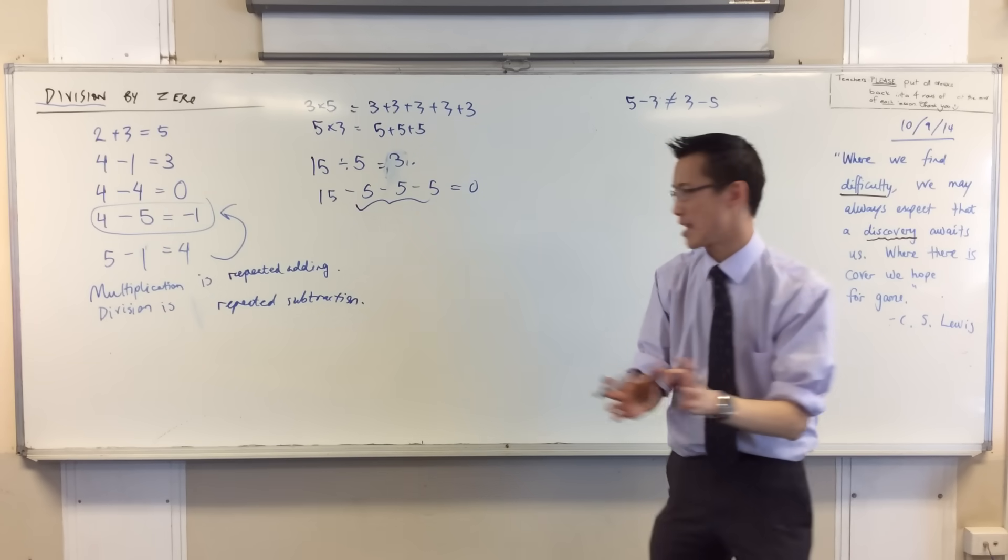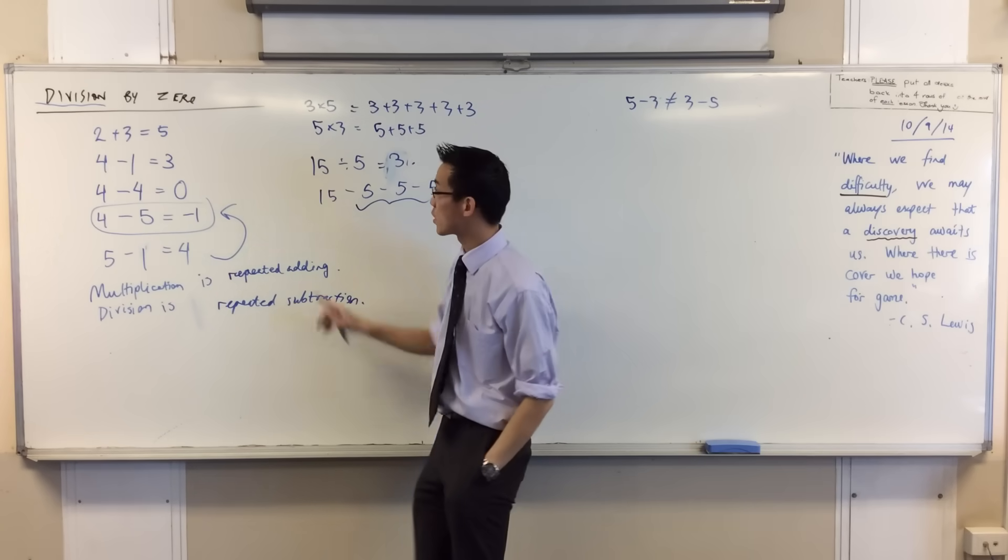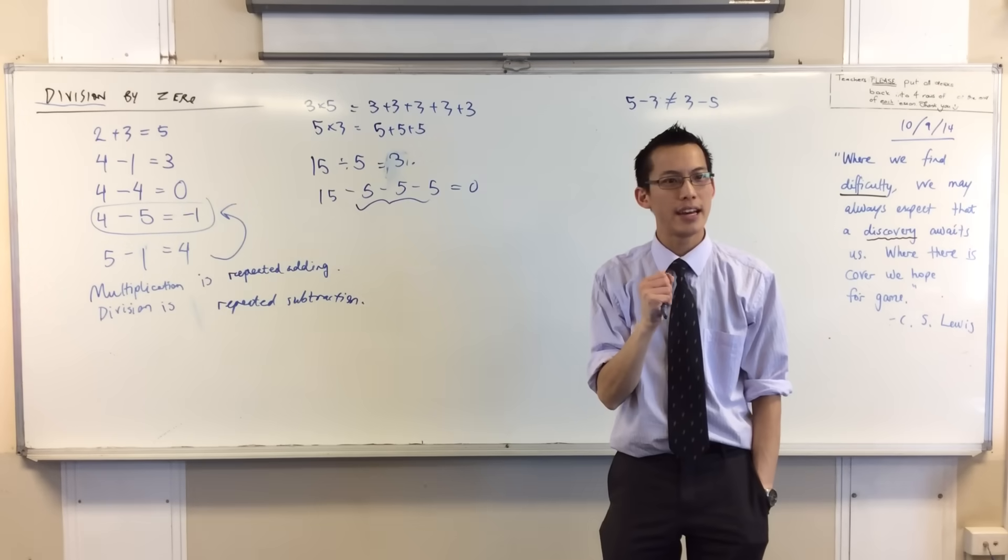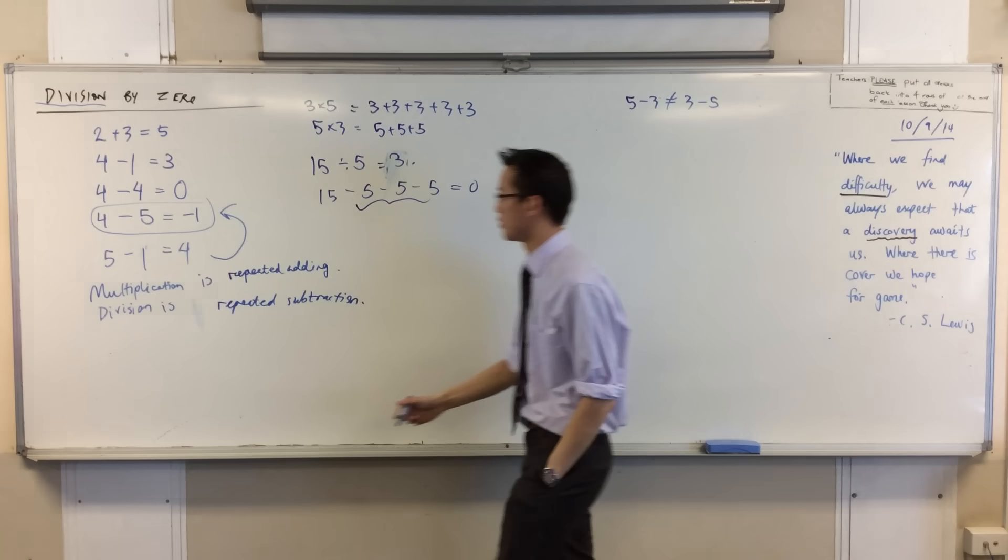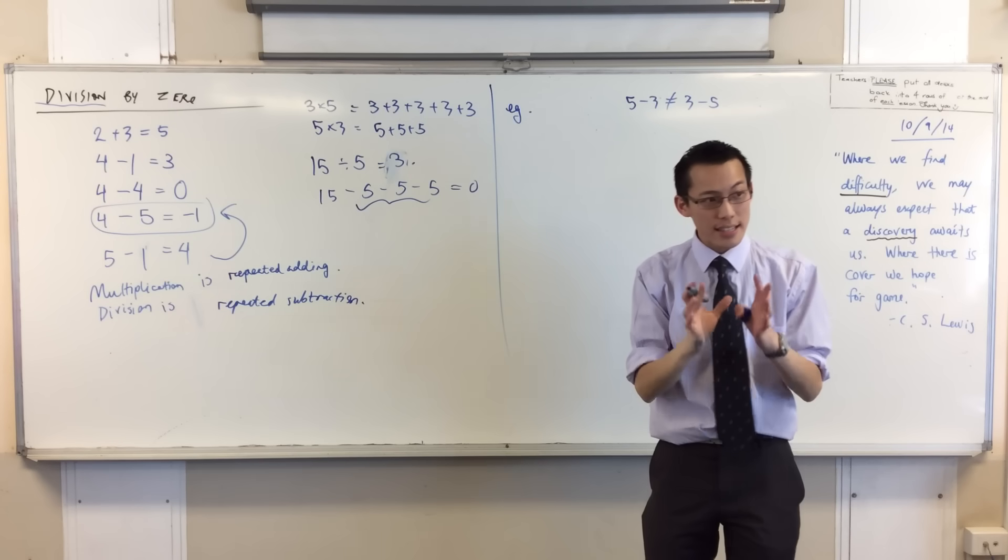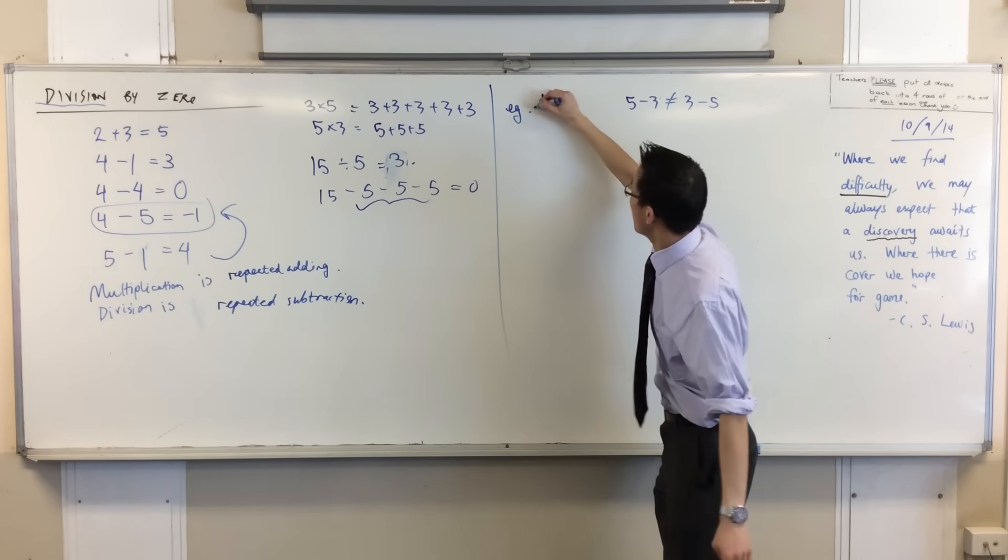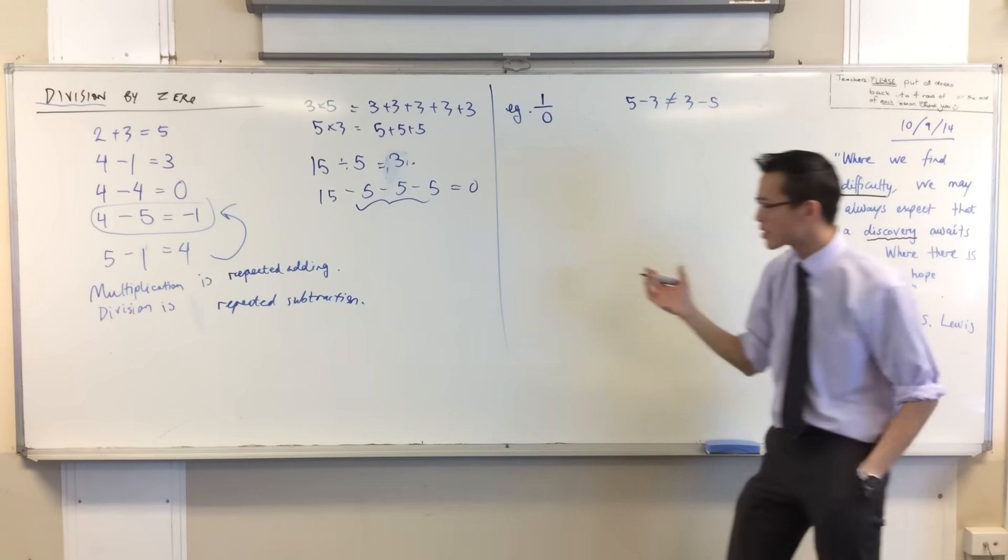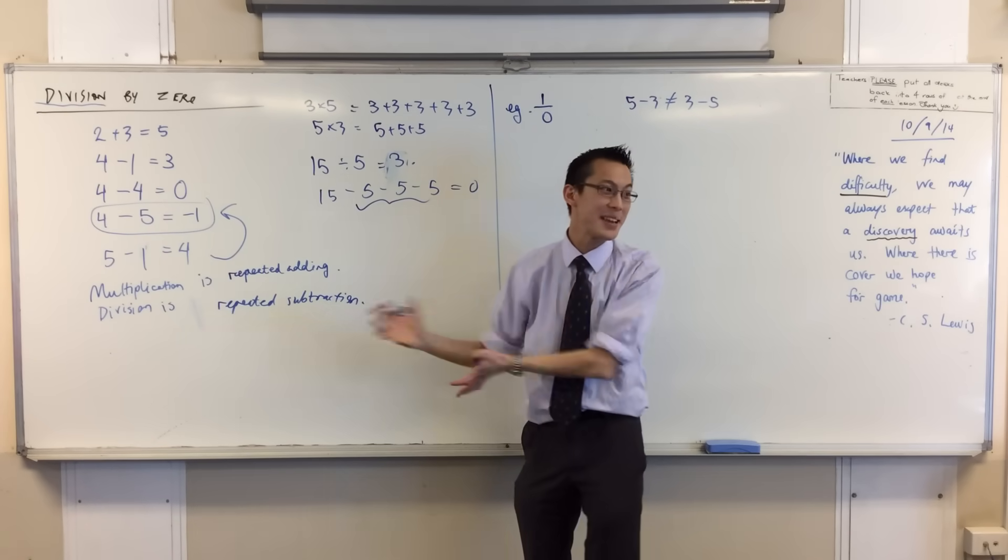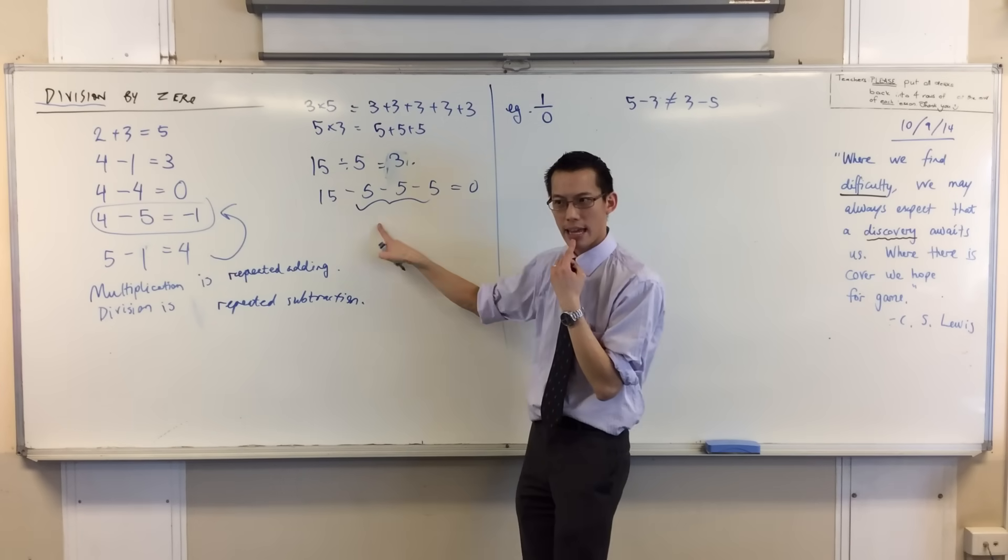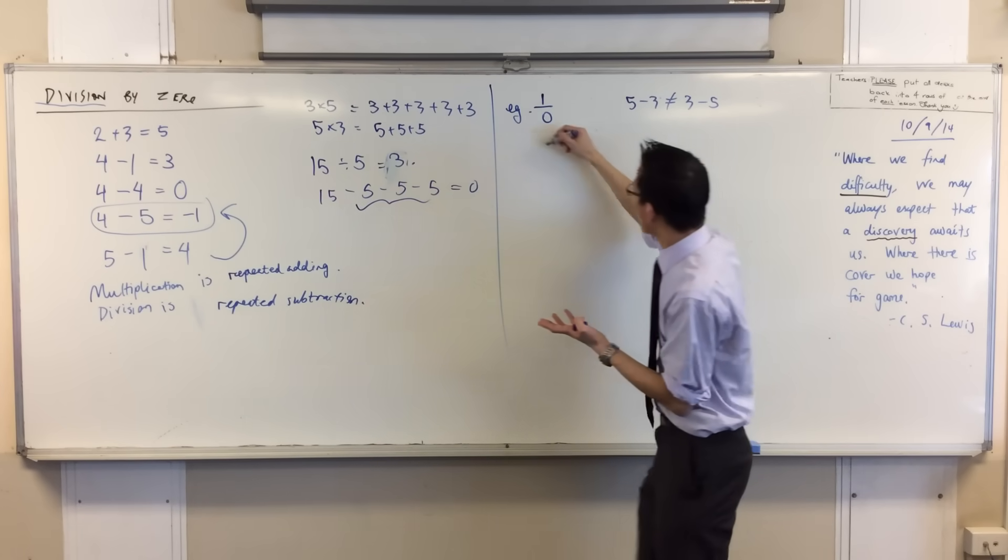Now you can see why I had to establish this, because that's going to be our gateway to think about what this means: division by zero. Example: let's consider what is one divided by zero. So if I take this basic, basic definition, it's well, how many times can I take away zero?